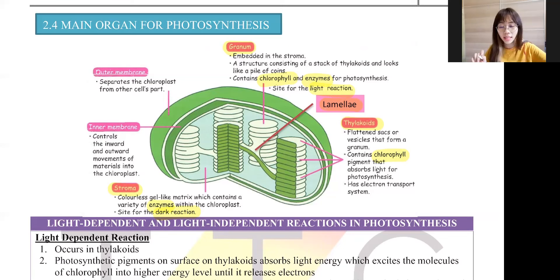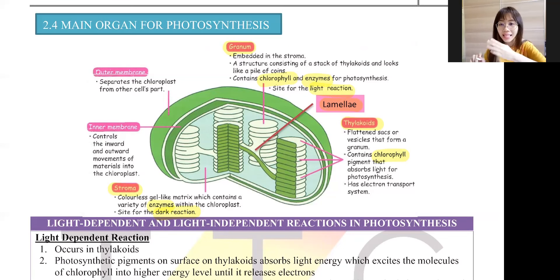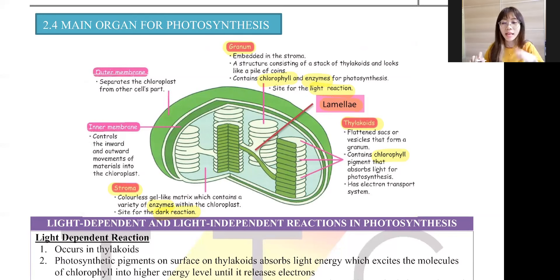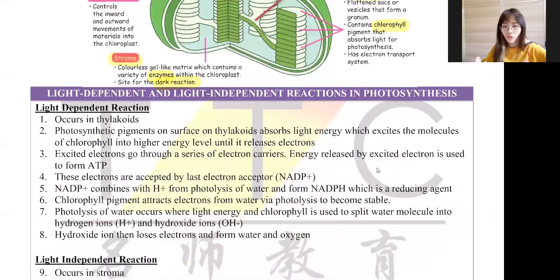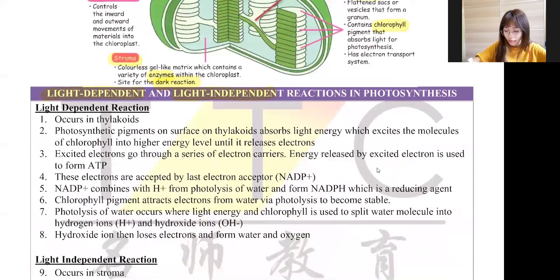So now we've learned the labeling. The key point is: the light-dependent reaction takes place at the thylakoids, and the light-independent reaction — the dark reaction — takes place at the stroma. This is the most important takeaway from the chloroplast diagram.